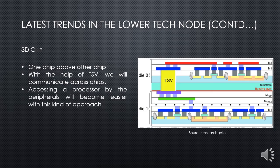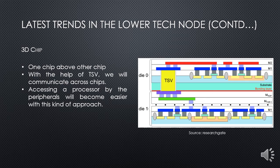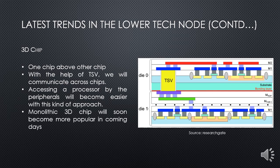Accessing a processor by peripherals becomes easier with this 3D chip architecture, because signals no longer need to travel through channels on the motherboard. Communication from one chip to the other becomes much easier. This is one of the latest trends in lower technology nodes. I will discuss the monolithic 3D chip in the next slides.